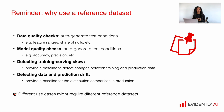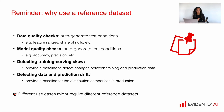There are a lot of things where we can benefit from using reference datasets to get auto-generated test conditions. For example, for data quality checks like feature ranges or share of nulls, and for model quality checks like model accuracy and precision. Instead of setting up all those test conditions ourselves, we can use the reference dataset and derive all those conditions automatically — like what was the share of missing values in our reference dataset — and then compare our new batches of data with those conditions.